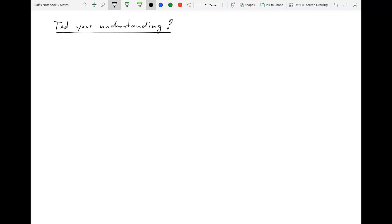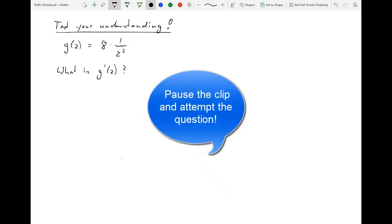So next I want you to test your understanding. Here's a function. g of z is equal to 8 times 1 over z squared. The question now, quite straightforward, is what is g prime of z? What's the first derivative? Pause the clip and attempt the question yourself.